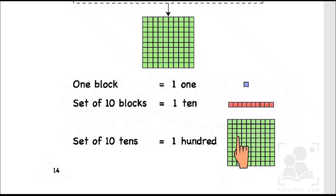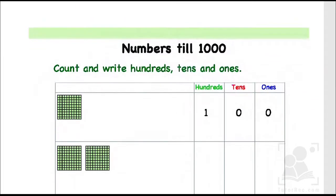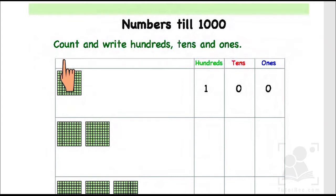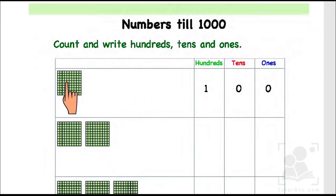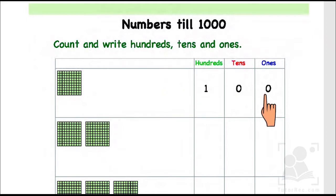Let's try to practice it on the next page. Here in this exercise we have to count and write hundreds, tens and ones. The first one has been done for us. We don't have any single set of ten blocks, that's why we have written zero tens. We have ten tens over here - this is ten groups or sets of ten blocks - that's why we have written one hundred. And we don't have any single unit, that's why we have written zero ones.